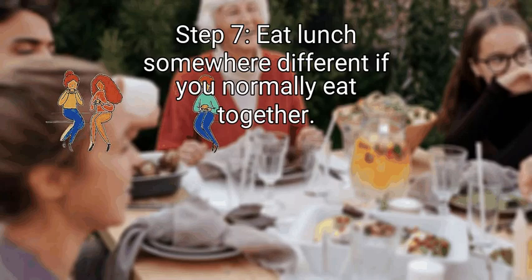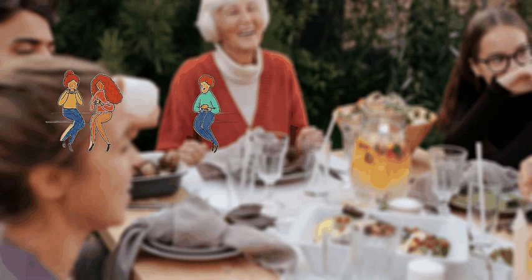Step 7: Eat lunch somewhere different if you normally eat together. Lunch can become an awkward situation if you normally eat with them or at the same table. Changing your routine will make it easier to ignore them, especially if they keep trying to talk to you. If you have to eat lunch with them, ask your mutual friends to act as a buffer. Switch tables in the cafeteria or ask if you can eat lunch outside. You could also eat your lunch quickly and then go hang out in the library. If you normally eat lunch in the break room at work, go out for lunch or eat in your car or cubicle.